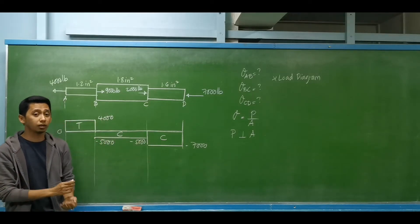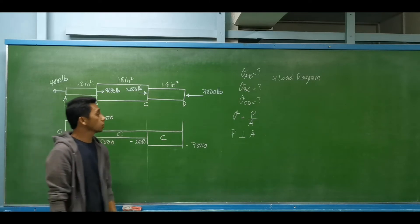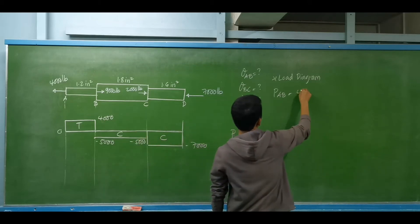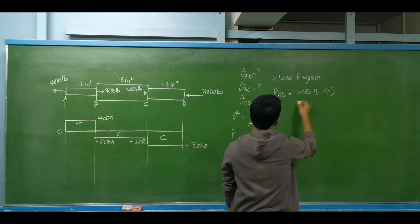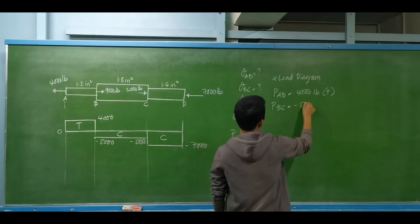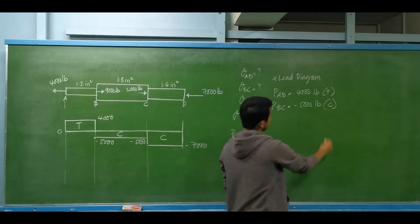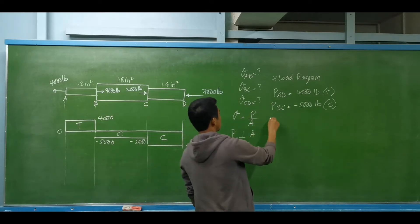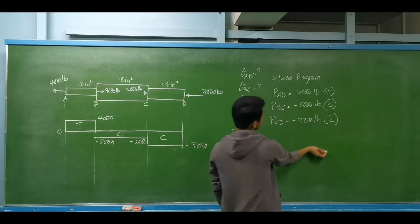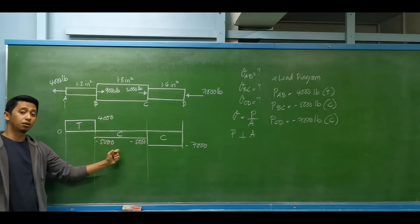That is one advantage of the load diagram — we can easily determine which segment is under compression or under tension. The actual force for member AB is 4,000 pounds under tension. The actual force for member BC is negative 5,000, indicating compression. The actual force for segment CD is negative 7,000 pounds, also under compression. Those are the actual forces per segment based on our load diagram.